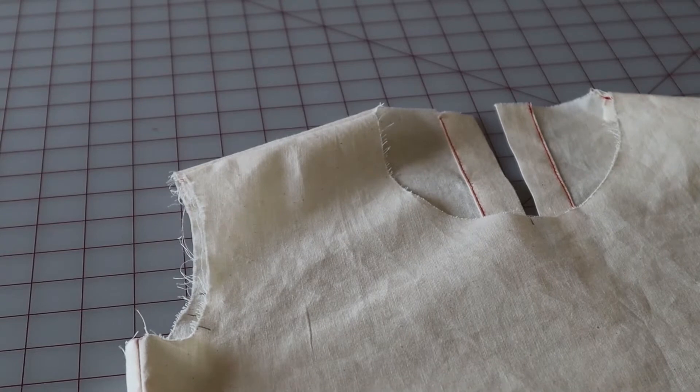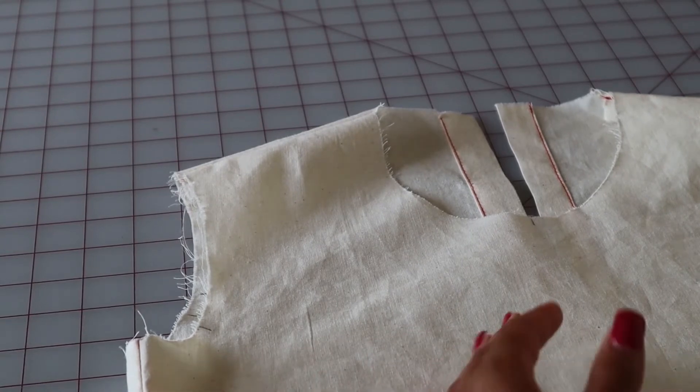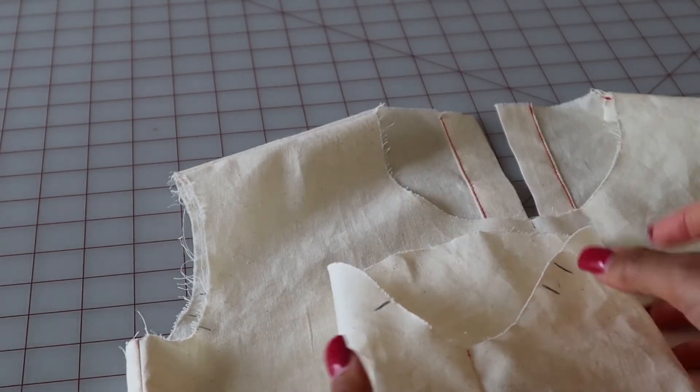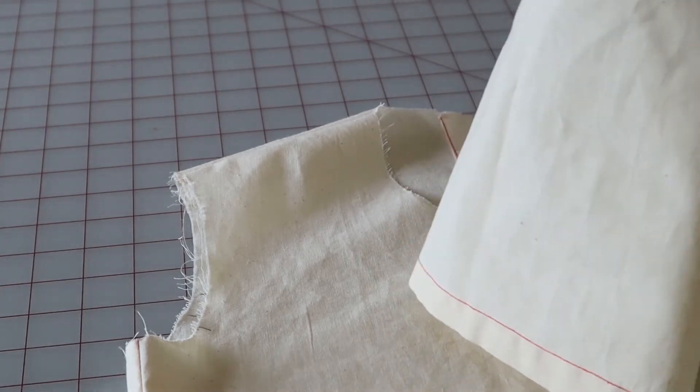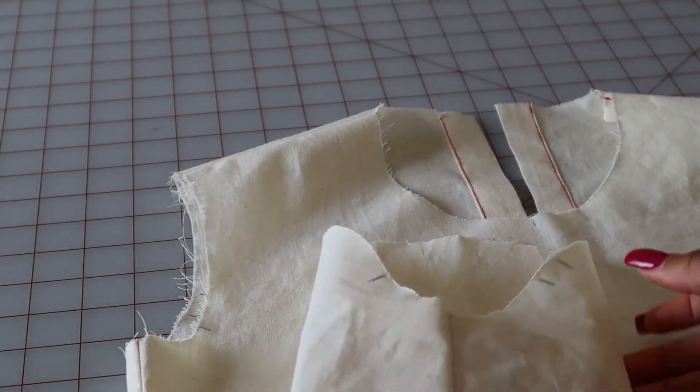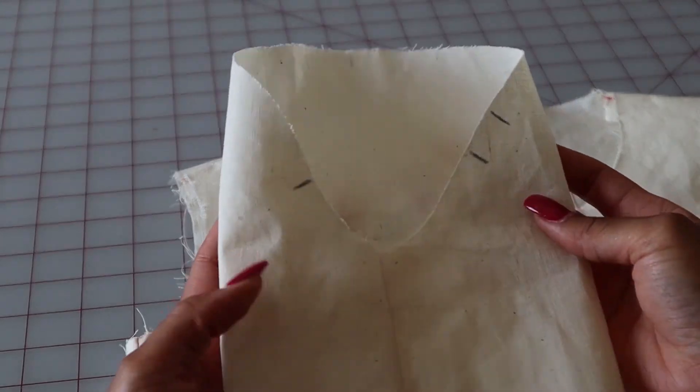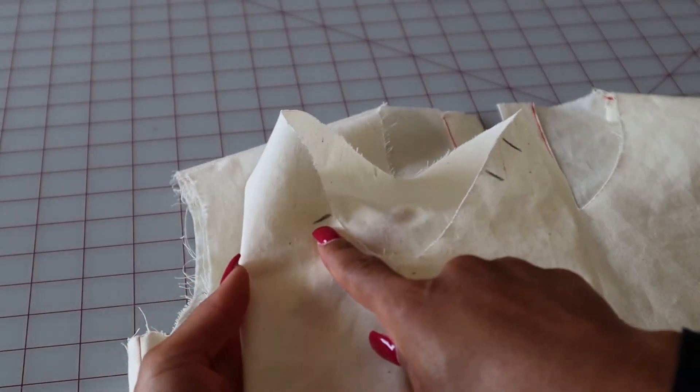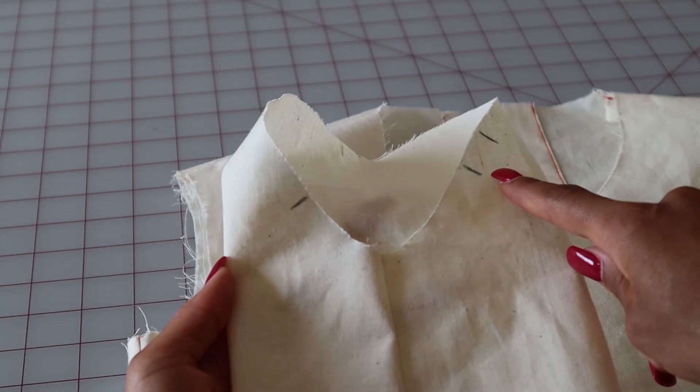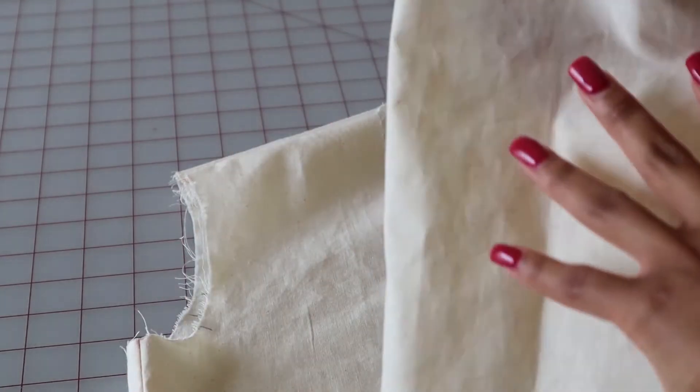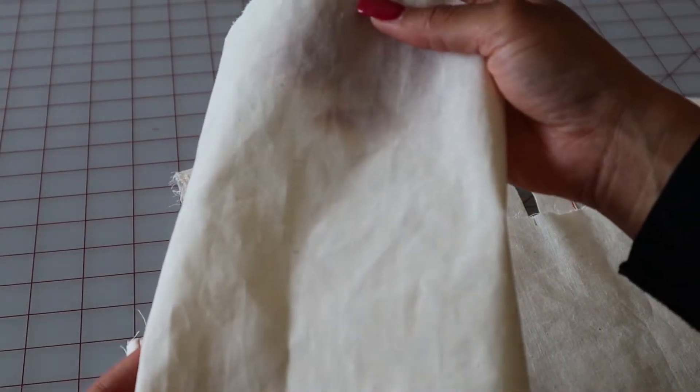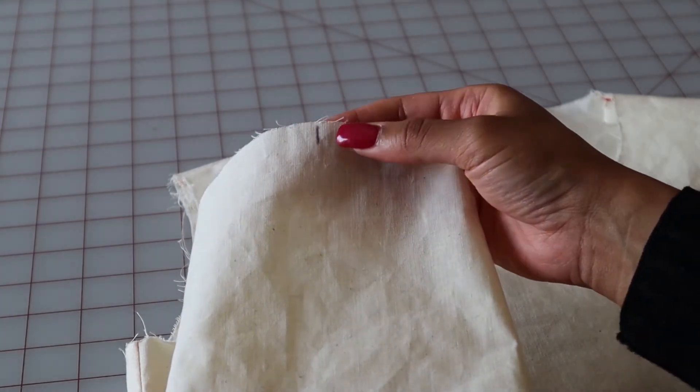So now we will sew our sleeve onto our bodice. Here we're going to be doing a set-in sleeve. So here's our sleeve with the hem finished, and here are the important notches. Once again, you have one for the front, two for the back, and then one for the top of your sleeve which you will match with the shoulder seam of your bodice.